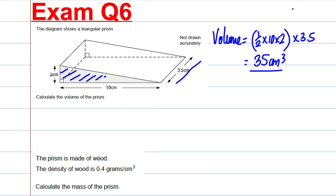And then it says the prism is made of wood. The density is 0.4 grams per centimetre cubed. Calculate the mass. We know that density is mass over volume. And rearranging, mass is density times volume. The density is 0.4 grams per centimetre cubed. Our volume is 35 centimetres cubed. Multiply these together. And we get ourselves that the mass must be 14 grams. And we're done.